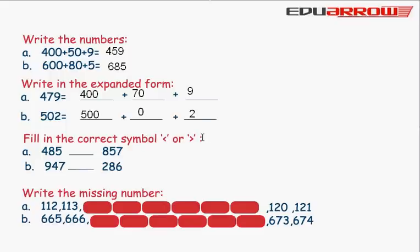485 and 857. 485 is less than 857. Now 947 and 286. 947 is greater than 286.